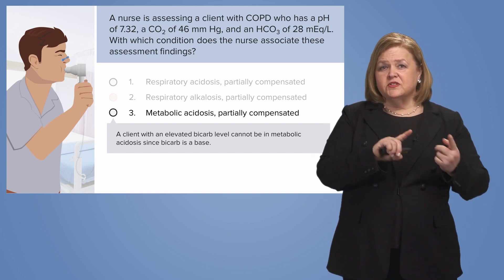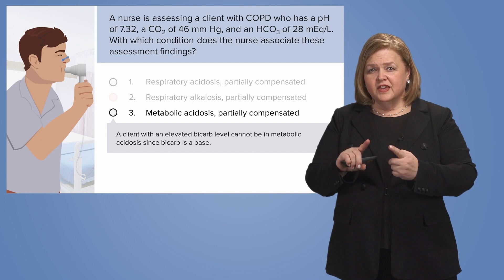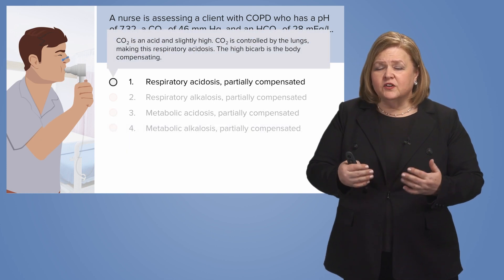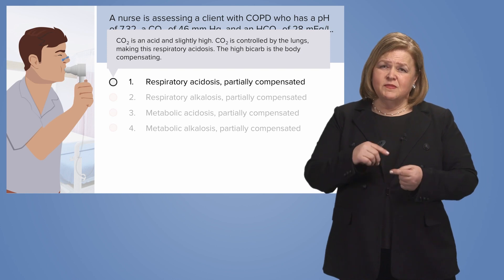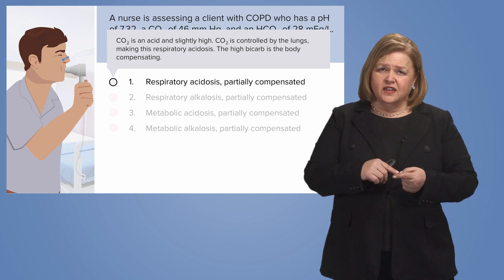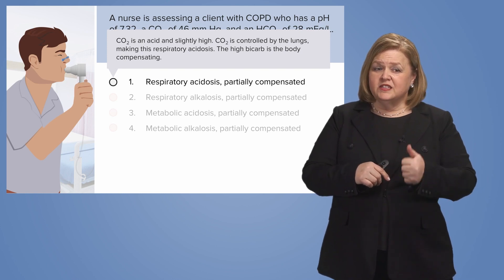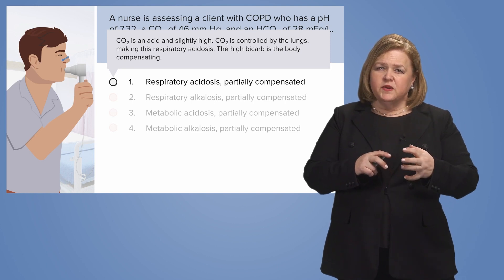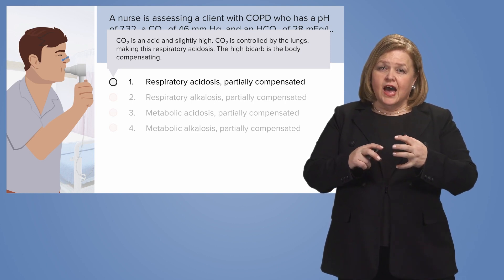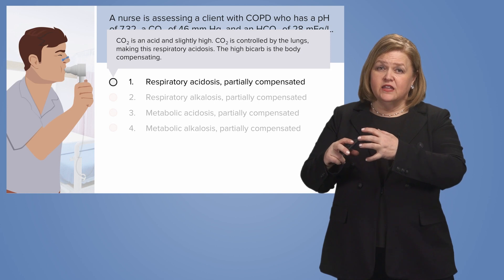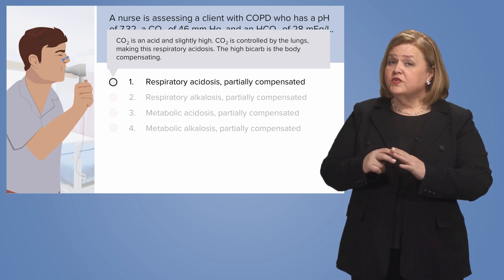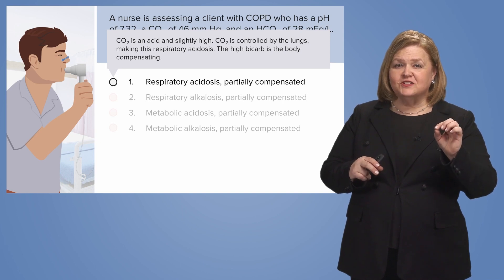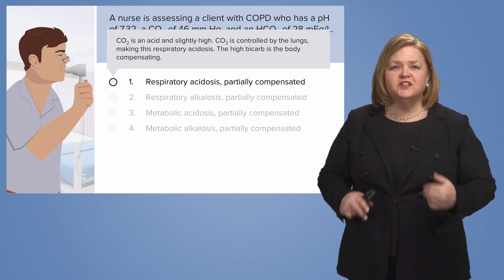Why would this not be metabolic acidosis? Well, if bicarb is a base, in order for this to be metabolic acidosis I would expect there to be less base. If the cause of this pH of 7.32 were metabolic, I would have less base available. This patient has extra bicarb — that means the body is trying to get back to homeostasis, hence 'partially compensated.' So this is respiratory acidosis, and the body is raising bicarb to bring the pH back toward normal.